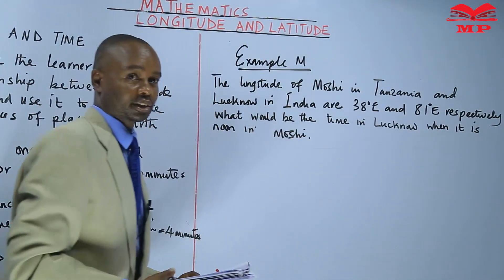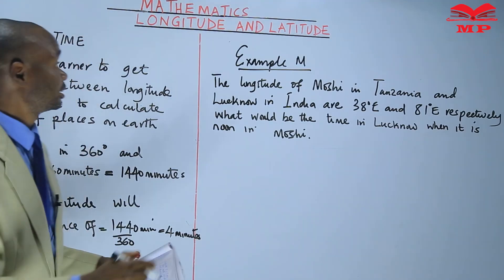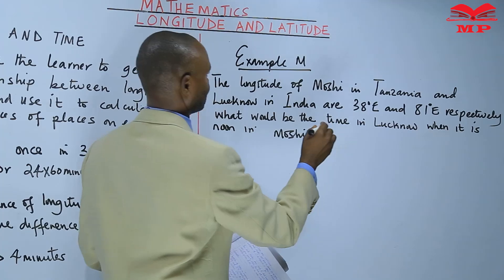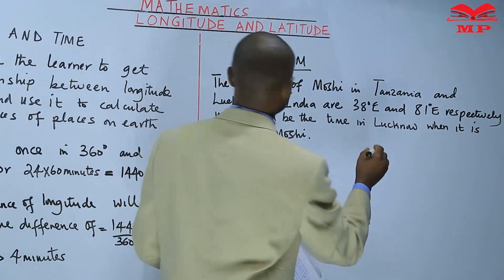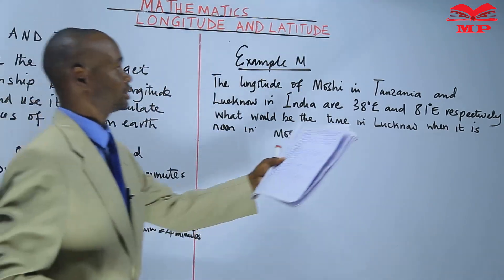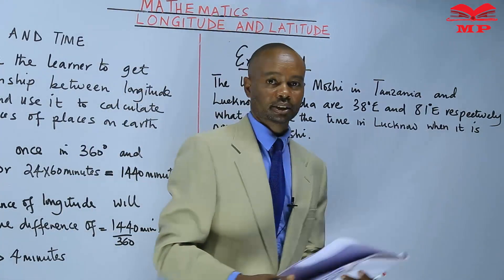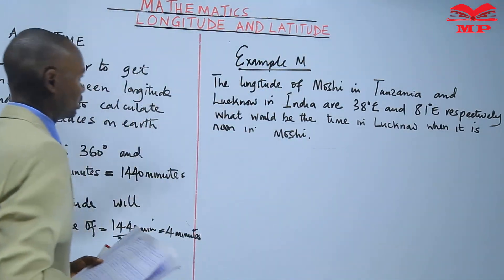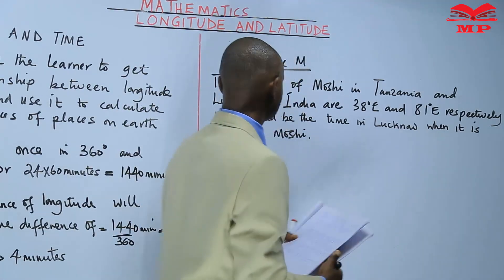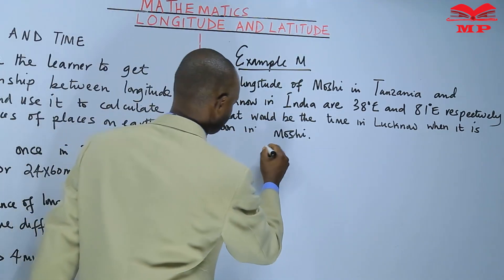Here is a question on the board. The longitudes of Moshi in Tanzania and Lucknow in India are 38 degrees East and 81 degrees East respectively. What will be the time in Lucknow when it is noon in Moshi?